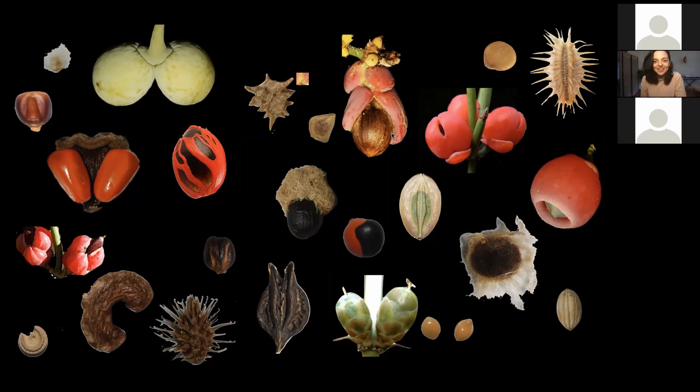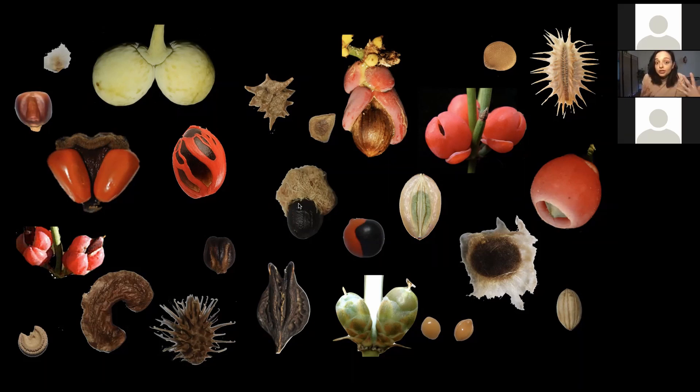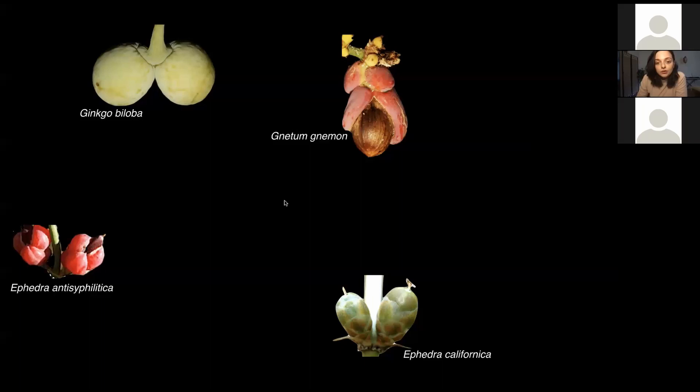Hello, everyone. So today we're going to talk about seeds. To approach the understanding of the evolution of this very enigmatic structure, which is the seed, reaching the morphologies you can see in this slide, it is necessary to get an insight into the genes that are involved in its development. The seed constitutes a turning point in the evolution of land plants, and it's an important synapomorphy of all seed plants. Today I'm going to share with you the results of the work we have been doing on four different species of gymnosperms.